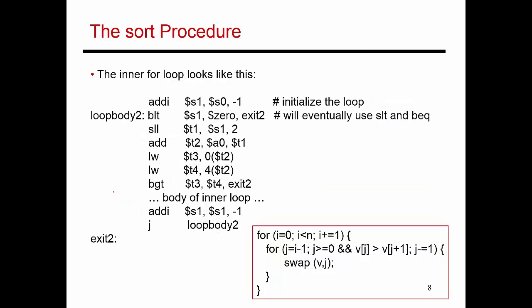Now let's look at the inner loop. The inner loop starts by initializing j. We are setting j equals i minus 1. i is in s0, j is in s1. So I take s0, subtract 1, put it into s1. Now I have the value of j initialized. Now I need to check these conditions. I first check to see if j is greater than or equal to 0.